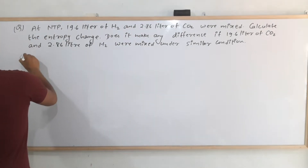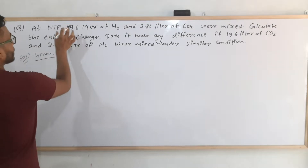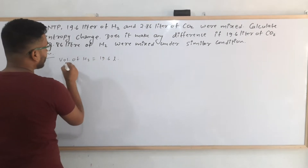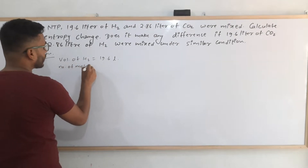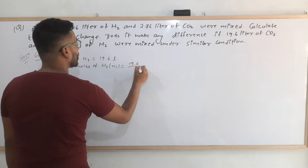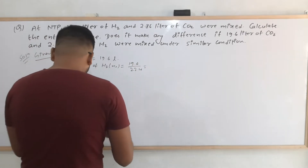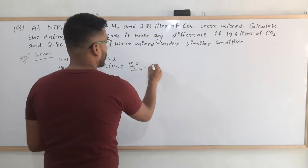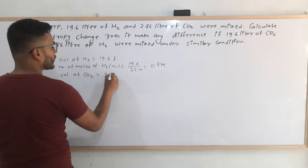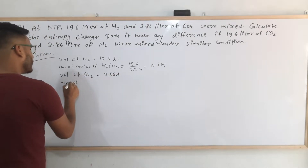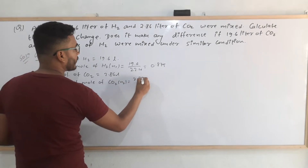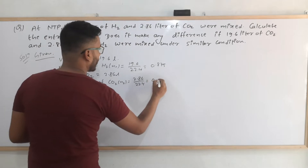In the first case, the volume of hydrogen is 19.6 liters. The number of moles of hydrogen, N1, is calculated as 19.6 divided by 22.4, which gives 0.875. Similarly, the volume of carbon dioxide is 2.86 liters, so the number of moles of CO₂, N2, is 2.86 divided by 22.4, which equals 0.125.